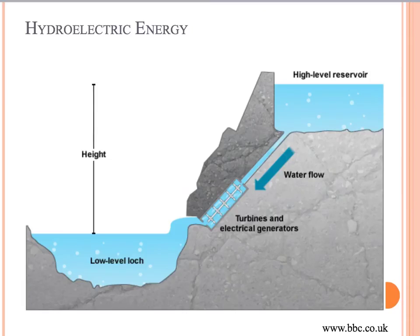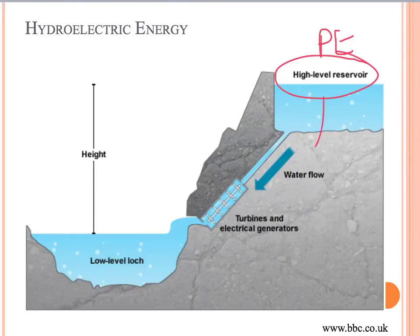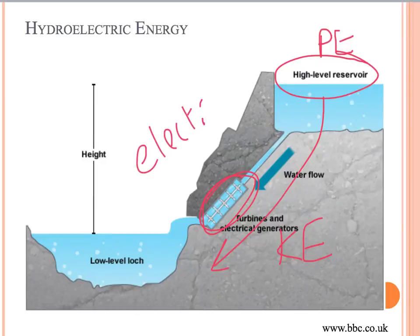A possibly less familiar type of energy is hydroelectric energy. It takes the potential energy from water that's very high up, and as the water falls it begins to convert into kinetic energy. That kinetic energy turns a generator, and from that generator we transform from potential energy to kinetic energy into electrical energy. 'Hydro' means water, and 'electric' obviously indicates that electricity is involved.